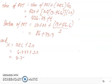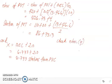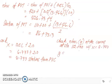This distance x = 8.733 is measured from PVC. We're going to check whether the elevation of the curve at station 112+00 with x equal to 8.733 is actually equal to 424.5 feet. We'll verify this using the parabolic equation y = ax² + bx + c, evaluated at station 112+00 with x = 8.733.